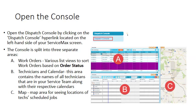The console is split into three separate areas. A: Work Orders — this holds various list views to sort work orders based on order status. B: Technicians and Calendar — this area contains the names of all technicians in your service team along with their respective calendars. C: A map area for seeing locations of technicians' scheduled jobs.